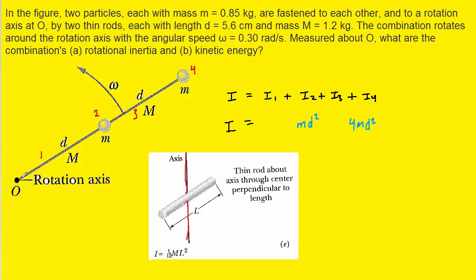If we look at our picture, we have this thin rod and its center would be right at this point. The problem is that our rotation axis is not passing through the center of the rod. So we cannot simply use 1/12 times the mass times l squared.